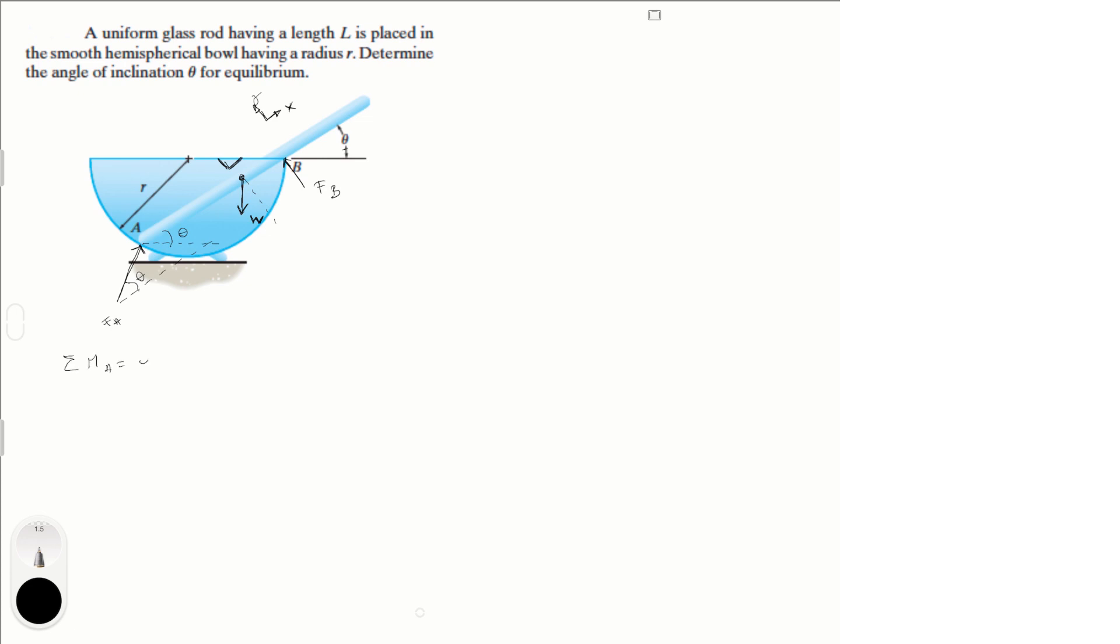First, I'm going to do the sum of the moments at A is equal to zero, assuming counterclockwise is positive. So we have minus W times L over 2 cosine of theta. Why we have minus W L over 2 cosine of theta? We're doing the sum of the moments at A, which is right here. And we have the weight right here.